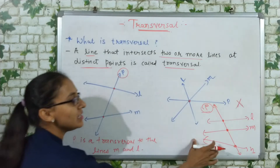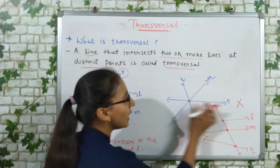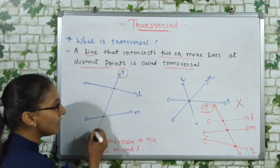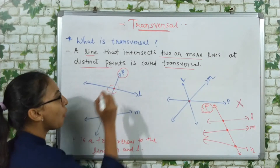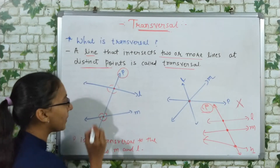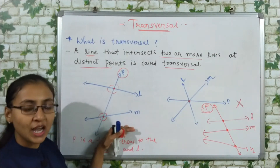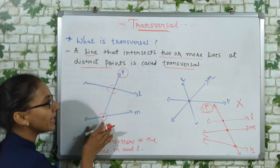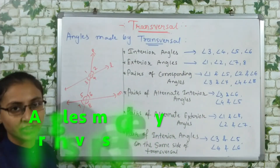So the first diagram shows line p as a transversal to lines l and m at distinct points, while the second diagram does not qualify as transversal since the intersection is not at distinct points. Now when line p intersects line l, four angles are generated there, and where it intersects line m, four more angles are generated. Let's now look at the next topic: angles formed by a transversal.